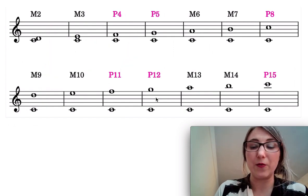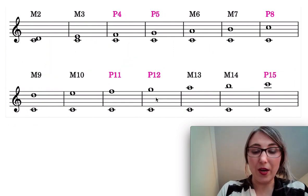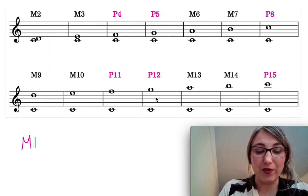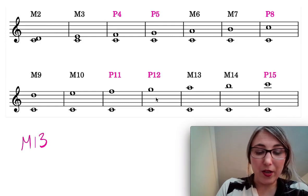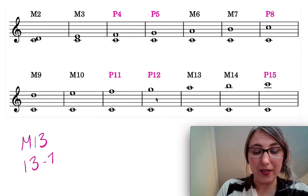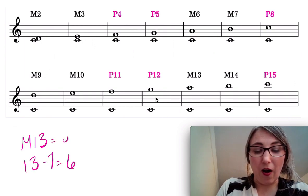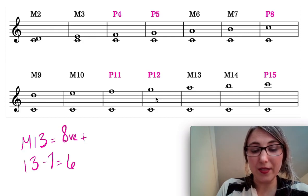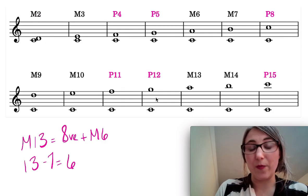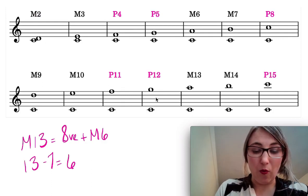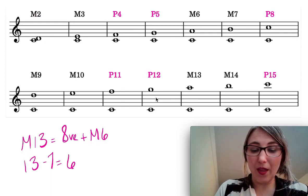And that's really helpful because that means that for instance if I give you an interval and like let's say a major 13th and I ask you to spell it, well we can just think of, well a 13th is going to be 13 minus 7, 6, a 13th then is going to be an octave plus a major 6. I just have to subtract 7 from the number. So I'm going to keep the quality the same and then I just add 7 to get the compound version.